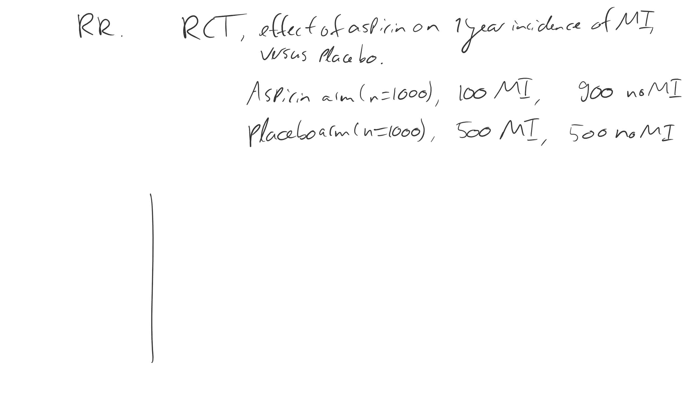Now we want to make a table. You should remember this table. You should always make this table with these kinds of questions. In this table, you put in myocardial infarction or no myocardial infarction, and exposure or no exposure to the drug. So this is aspirin, and this is placebo. So what do we fill in? 100 myocardial infarctions versus 900 without. 500, 500.